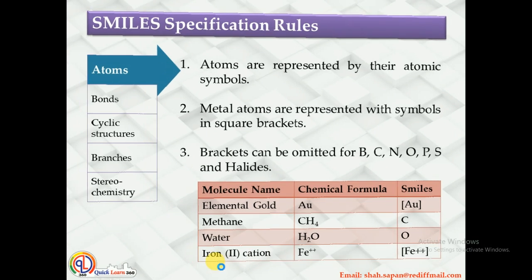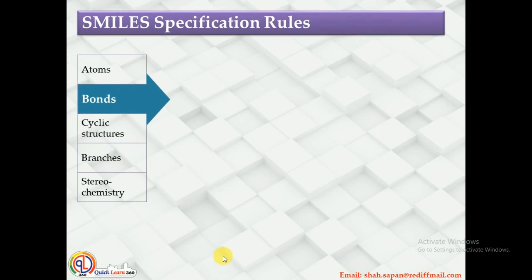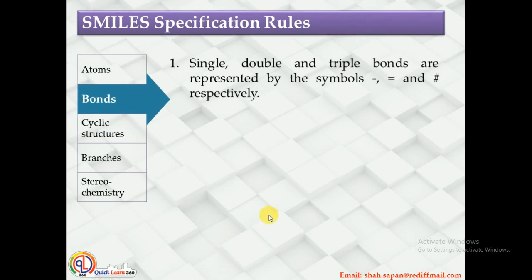Now let us see the specification rules for bonds. In case of a single bond, '-' is used, and for a double bond, '=' is used. However, for the triple bond you have to use the hashtag sign '#'. So if any two atoms are connected with a triple bond, you represent that connection with the '#' sign.